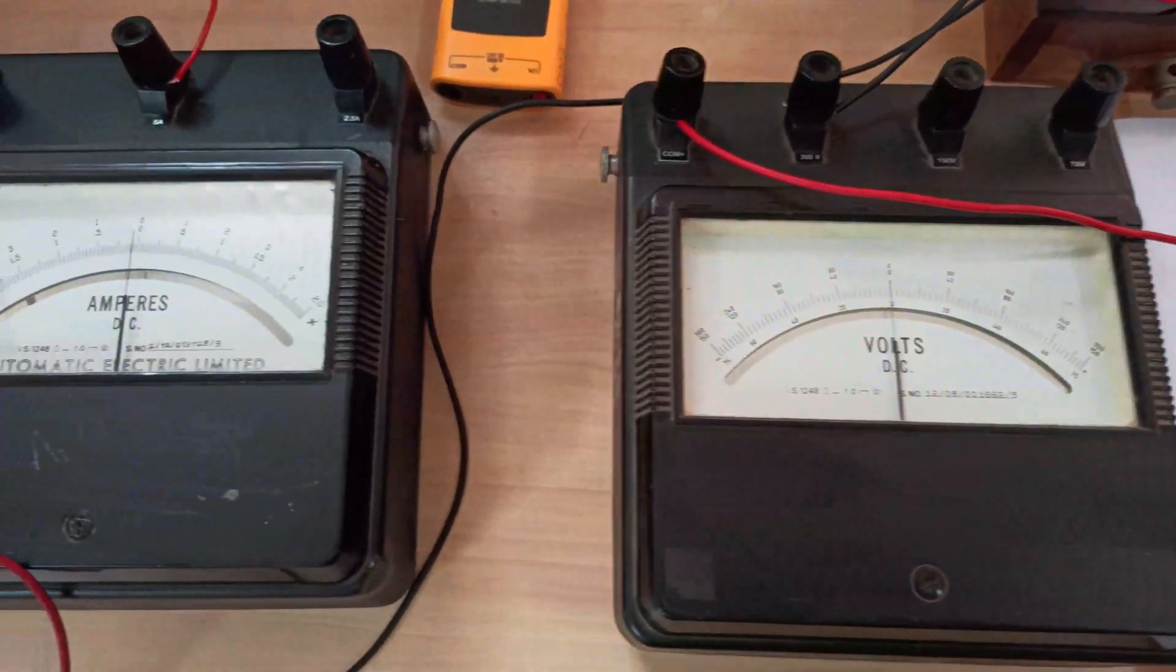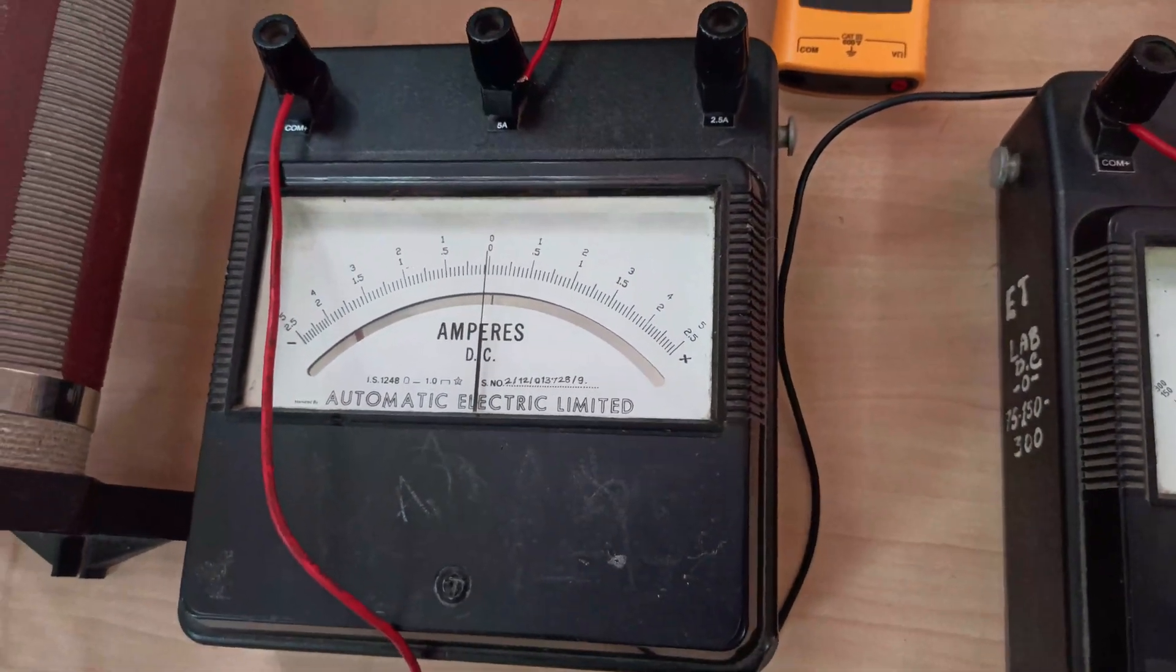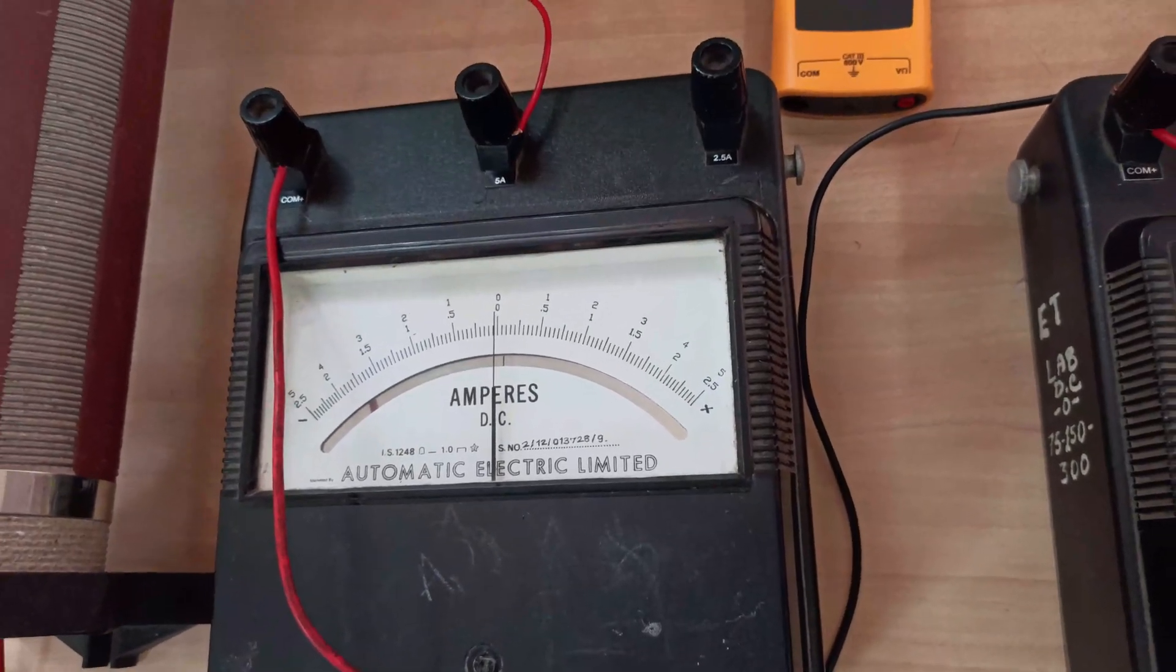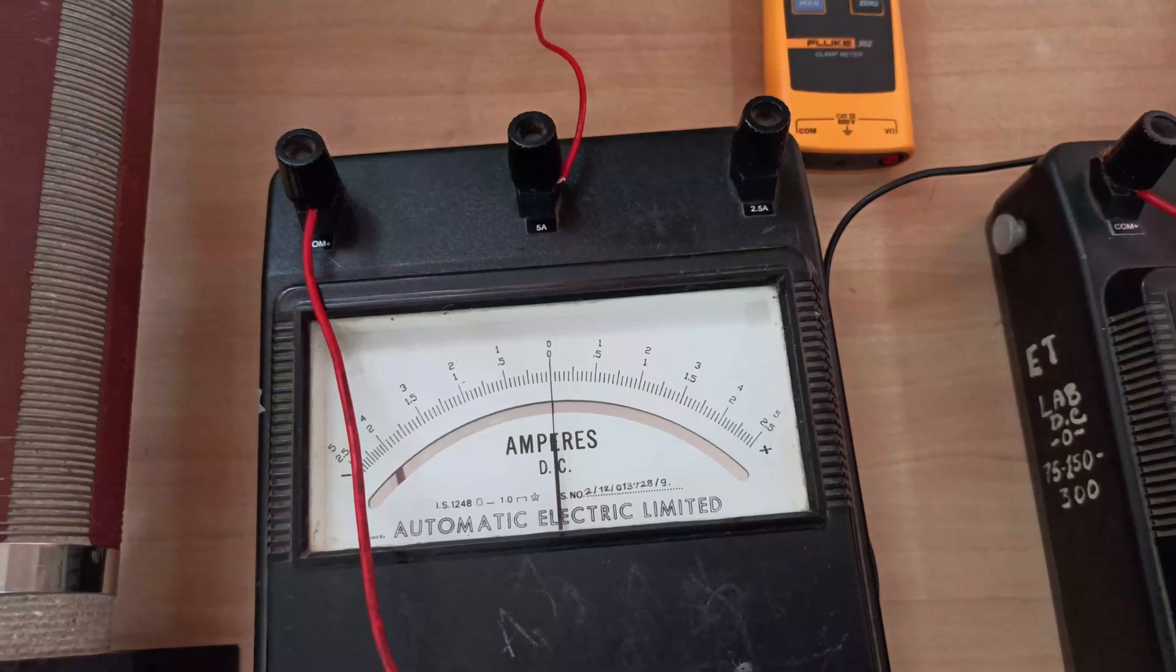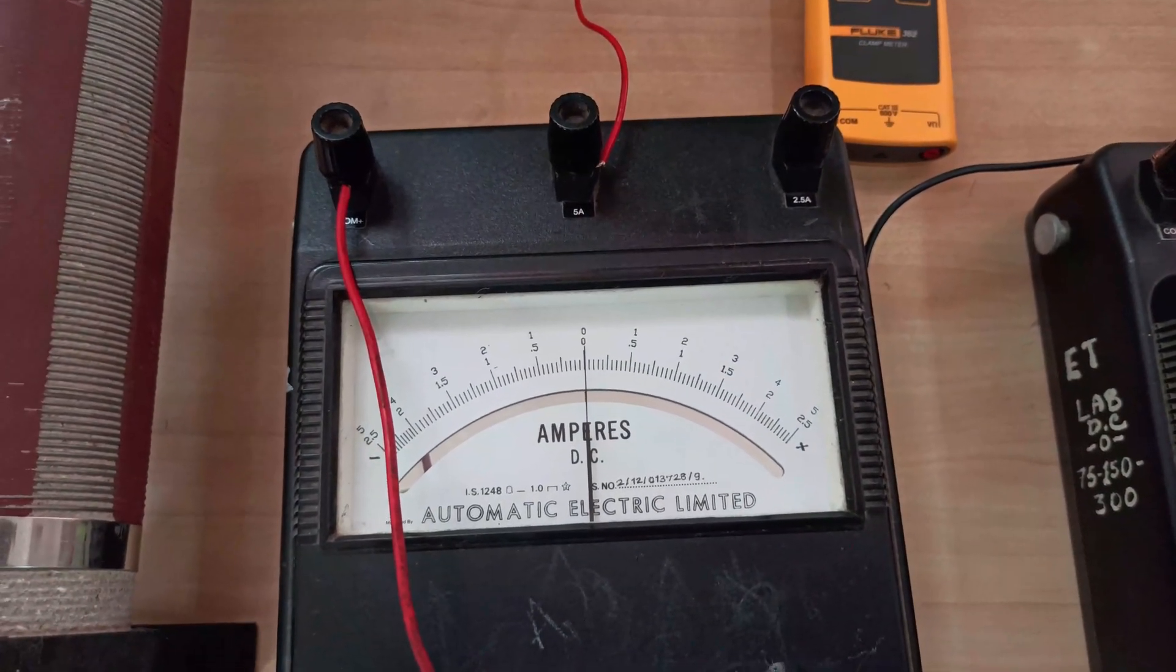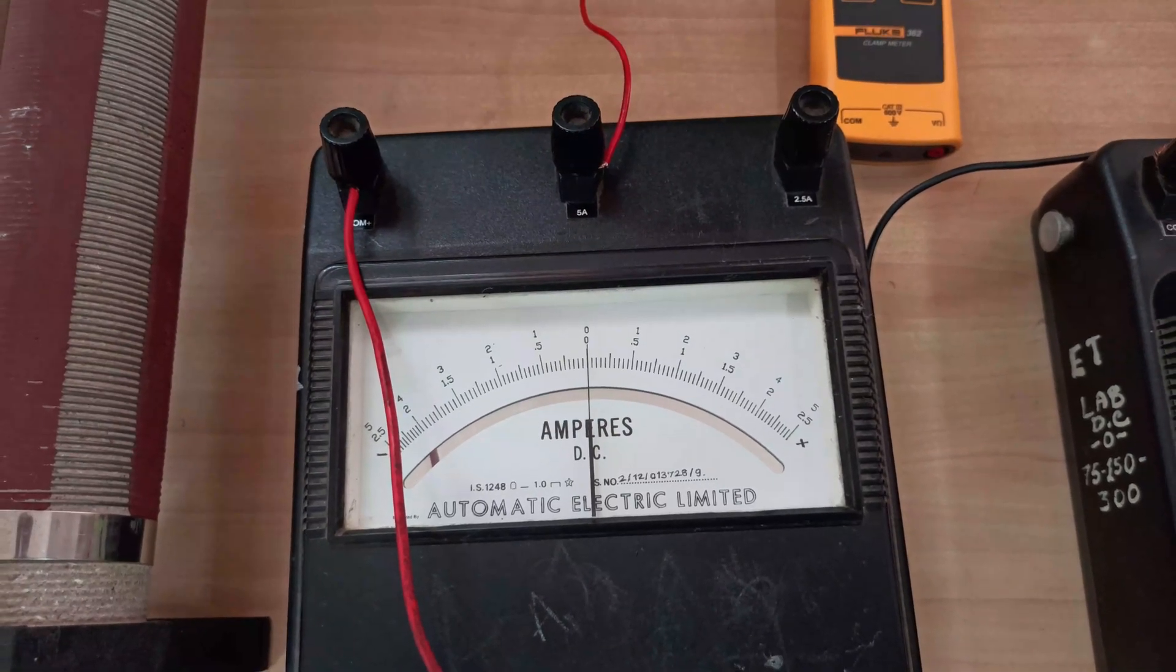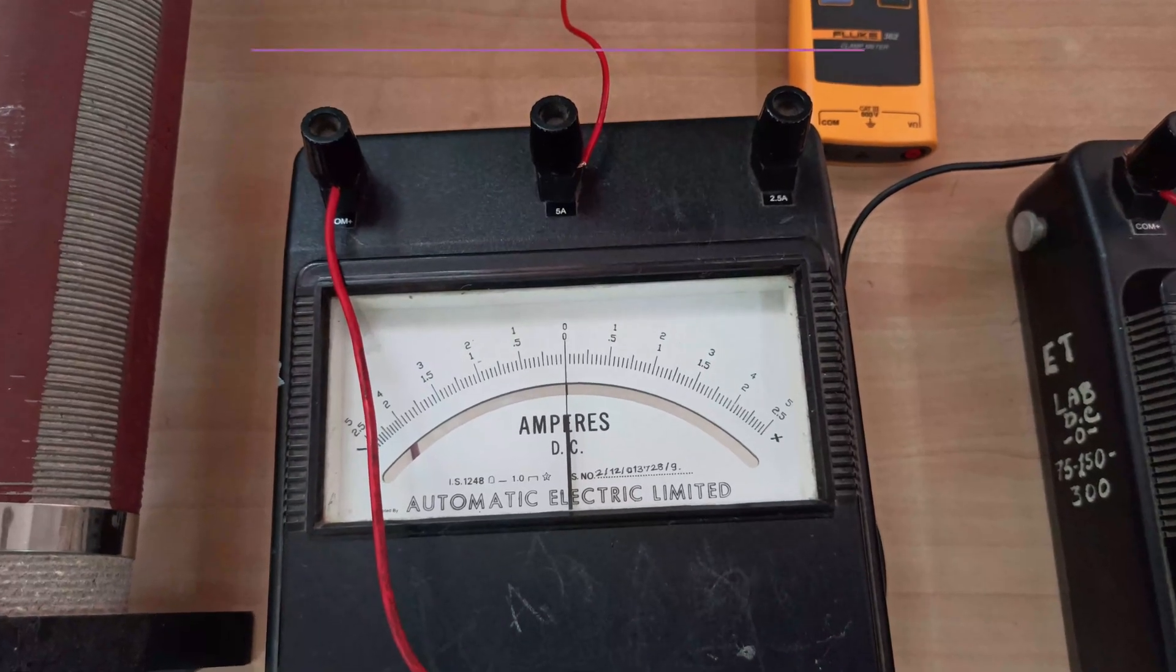The same thing goes with the ammeter. Here again you can see the actual indicator and its mirror image are not aligned. So again you position yourself such that those two lines are seen as a single line. Here you can see that indicator is perfectly aligned with the zero, so you need not do any offset adjustment. It is perfectly fine.